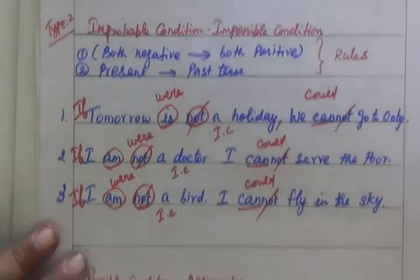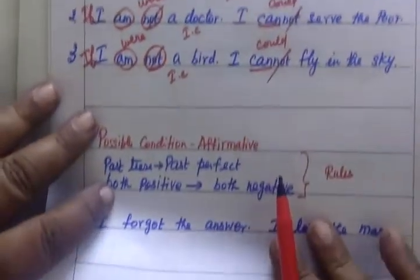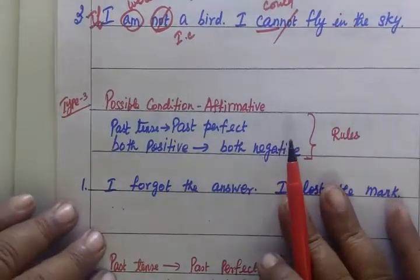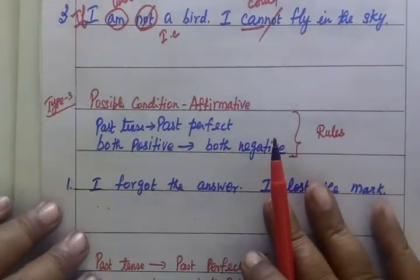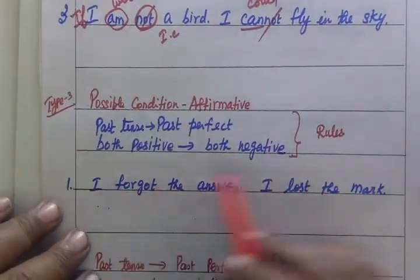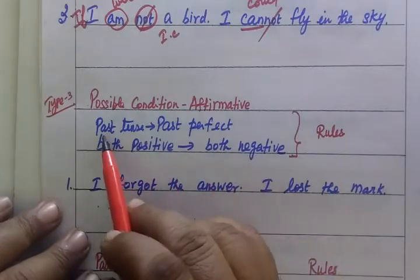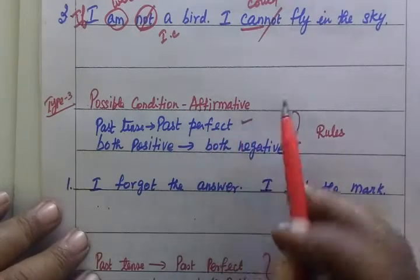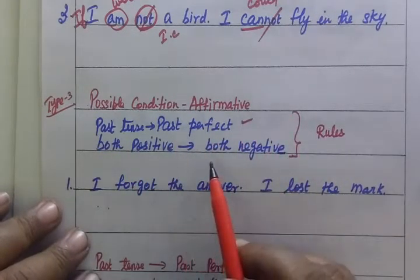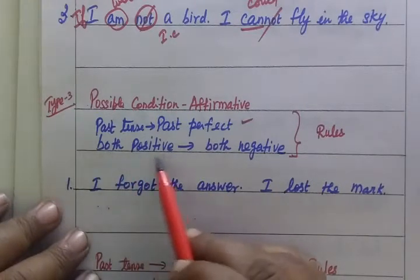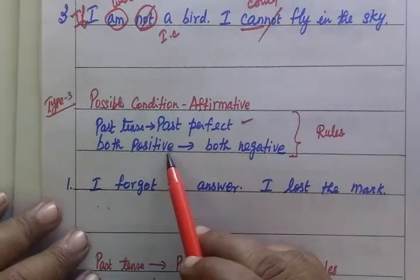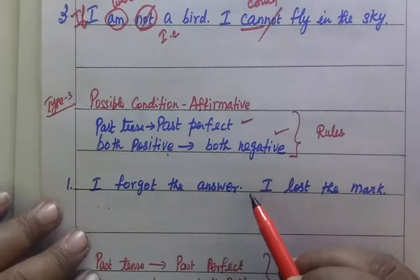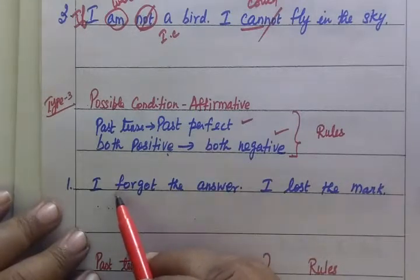Now come to the next type — the possible condition, that is affirmative. Here the rule is: past tense and past perfect. Both positive, and also both negative forms apply. This is similar to maths — like a formula.